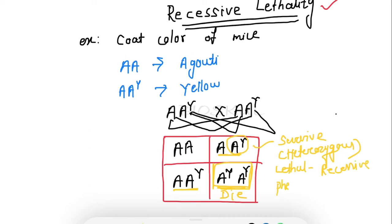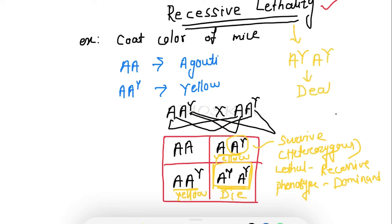In terms of phenotype, the yellow color allele acts in dominant form, so the heterozygous mice will show a yellow coat color phenotype. In recessive lethality, if the alleles are present in homozygous recessive form, the offspring dies. Only the homozygous recessive form dies, while the heterozygous form survives with a distinct phenotype. The surviving heterozygous mice show yellow color, while the dominant homozygous form shows agouti color.